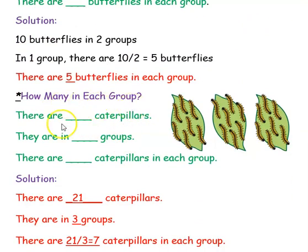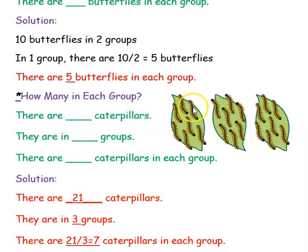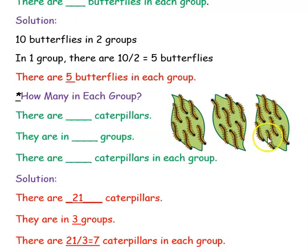Next example: how many in each group? There are dash caterpillars. Let's count the number of caterpillars first: 1, 2, 3, 4, 5, 6, 7, 8, 9, 10, 11, 12, 13, 14, 15, 16, 17, 18, 19, 20, 21. So there are 21 caterpillars.